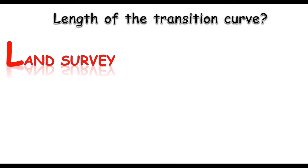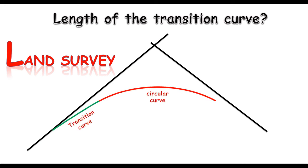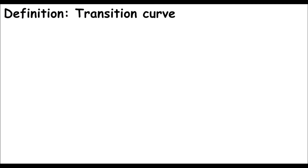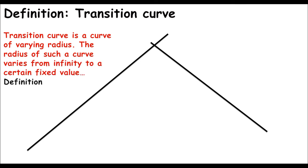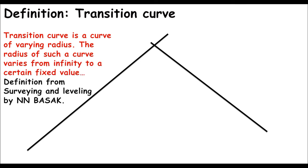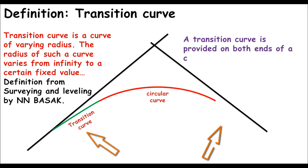My name is Isilhan and in this video we'll be learning the length determination of the transition curve. A transition curve is a non-circular curve. According to NN Basik, a transition curve may be defined as a curve of varying radius — the radius varies from infinity to a certain value. This definition is taken from 'Surveying and Leveling' by NN Basik. A transition curve is always provided on both ends of a circular curve.